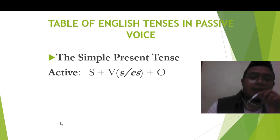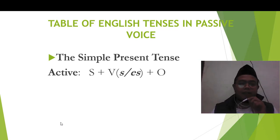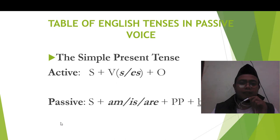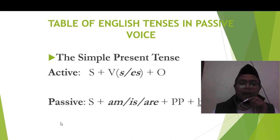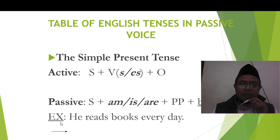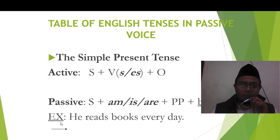Kita akan bahas satu per satu berdasarkan tensisnya. Bagaimana kalau ada di dalam simple present tense? Subject plus verb (is/are) plus object. Maka pasifnya menjadi subject plus to be (am/is/are) plus past participle plus by plus object. Tapi by sama objek itu tidak harus selalu ditampakkan — you don't have to put the by and object in passive form. Look at the example: He reads books everyday. He is subject, reads is verb, books is object. So it becomes: Books are read by him everyday.